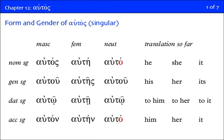You've learned it as one function, namely the personal pronoun. What we're going to find is that autos actually has three distinct functions. But first of all, as far as the form is concerned, it's a straightforward 2-1-2 adjective, so there are no surprises in the actual form, except that you'll notice something in the neuter. There is a sub-pattern in second declension neuters that drop the nu in the nominative and the accusative singular, and autos is one of those.